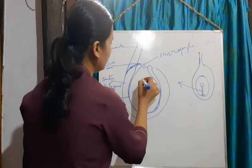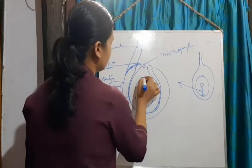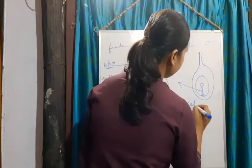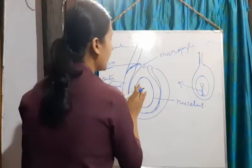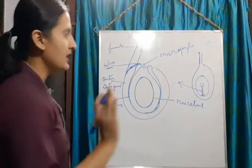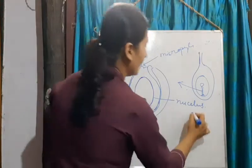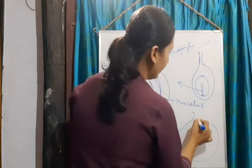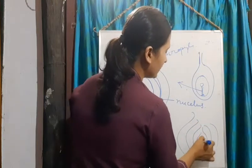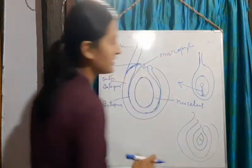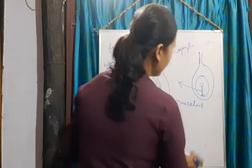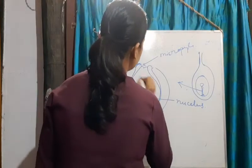Inside this ovule there is a sporogenous cell present, which is called the nucellus. Inside this nucellus, the gametophyte will be produced. Remember: there is an ovary, inside the ovary is a locule, inside the locule is the ovule, and inside the ovule is the nucellus. This nucellus is made up of cells, stores food, and provides nourishment to the cell. Inside the nucellus, the embryo sac will form.